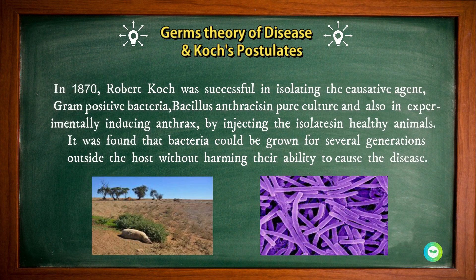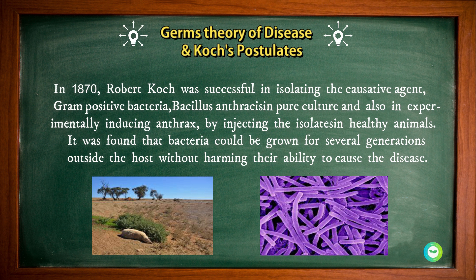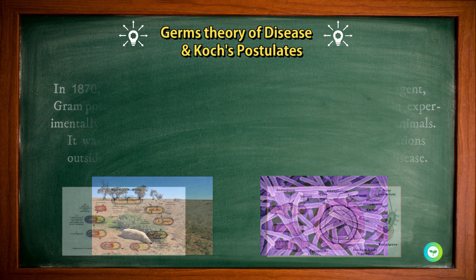In 1870, Robert Koch was successful in isolating the causative agent — the gram-positive bacteria Bacillus anthracis — in pure culture, and also in experimentally inducing anthrax by injecting the isolate into healthy animals. It was found that bacteria could be grown for several generations outside the host without harming their ability to cause the disease.